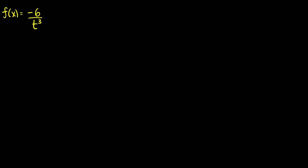In this video we're going to do some derivatives with the power rule. For the first one we have f of x is equal to negative 6 over t cubed. We want to bring the t cubed to the numerator, so this is equivalent to negative 6 times t to the negative 3.